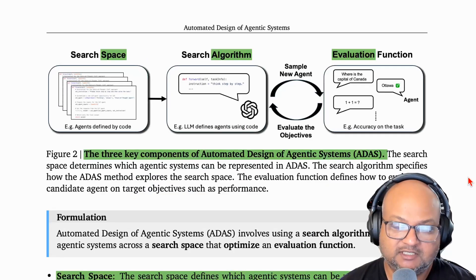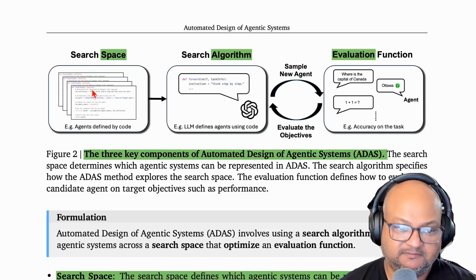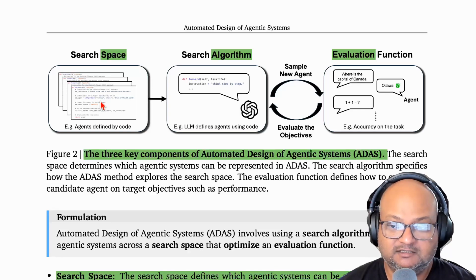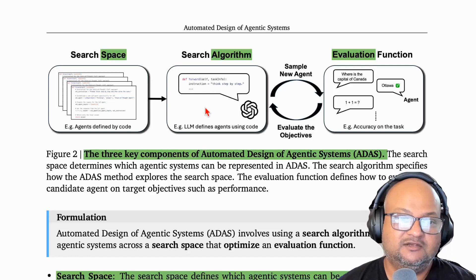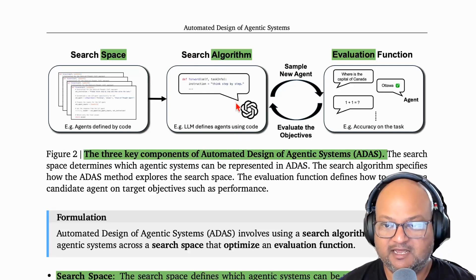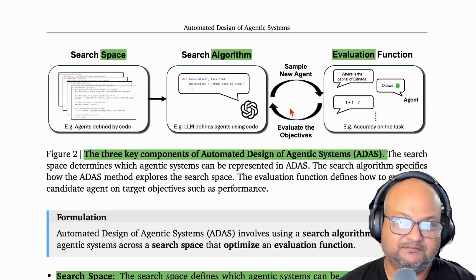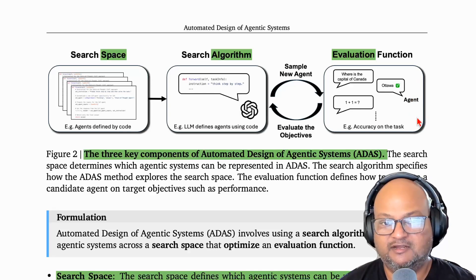Basically, this boils down to a search problem. And as with any search problem, you can break it down into three components. You have to define what your search space is — in this case, agents described in Python code with LLM prompts embedded within them. You then describe a search algorithm for finding new points within that search space. In this system, that algorithm is the meta agent, which proposes new and interesting agents. And finally, the proposed agents need to be evaluated using some sort of evaluation function that tells you whether they're any good or need to be improved.